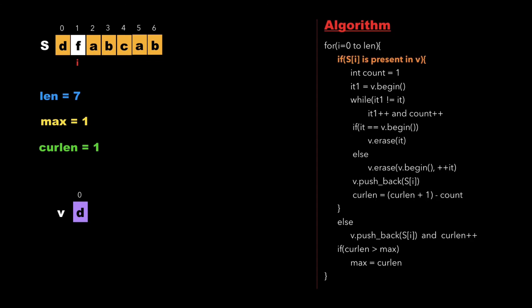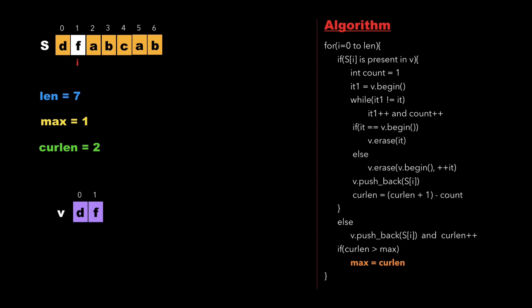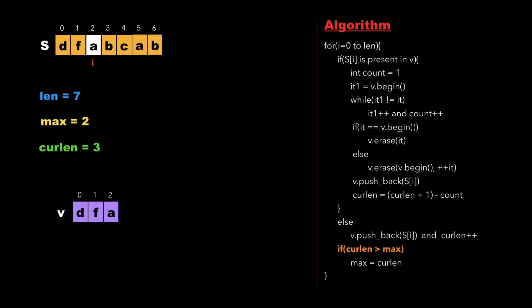We check whether 'f' is present in vector v - it is not, so we push it and increment current_length to 2. We check if current_length is greater than max and update max accordingly, then increment i. Now i points to 'a', which is also not present in vector v, so we push it and increment current_length. Similarly, 'b' is also not present so we perform the same steps.